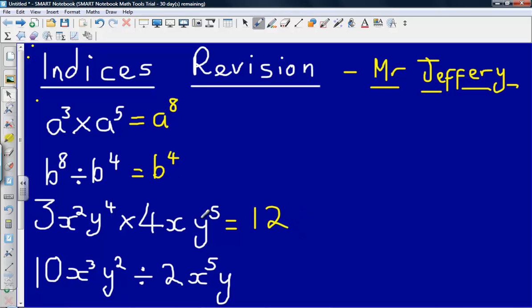Then we've got x to the power of two or x squared multiplied by x. If there's no power here we can just put a one. So x squared multiplied by x to the power of one gives us x to the power of three, simply adding those powers like we did a minute ago. And then lastly y to the power of four multiplied by y to the power of five, that will give us y to the power of nine. So again just adding those powers.